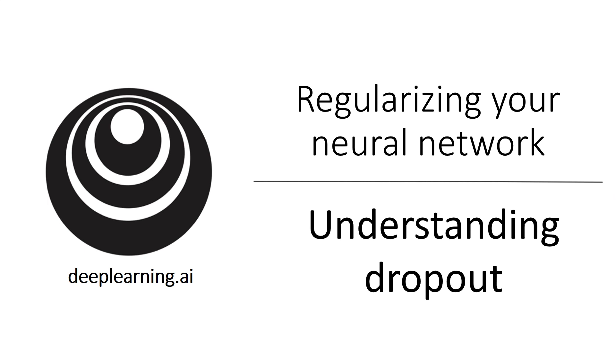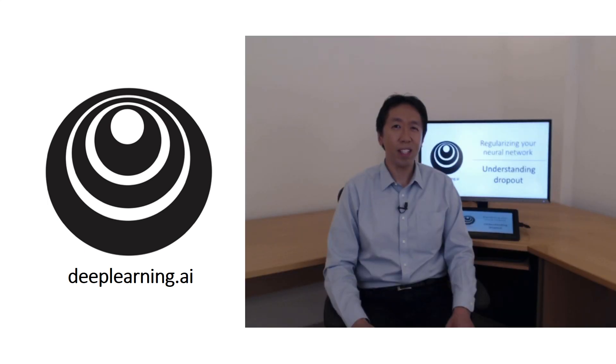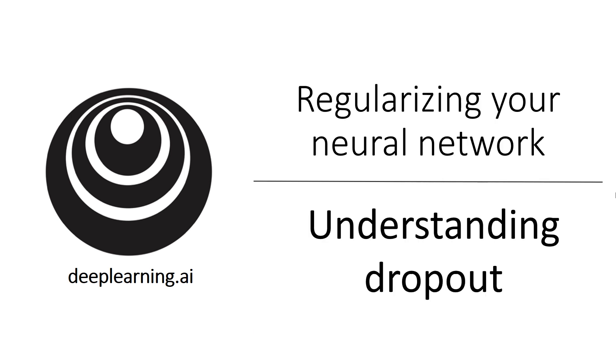Dropout does this seemingly crazy thing of randomly knocking out units in your network. Why does it work so well as a regularizer? Let's gain some better intuition.